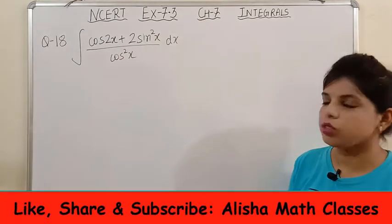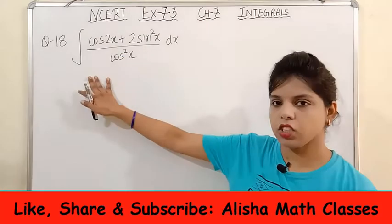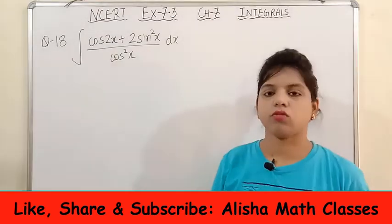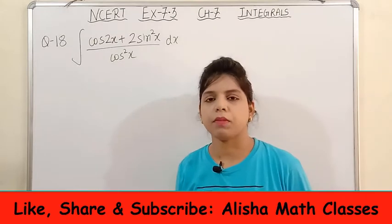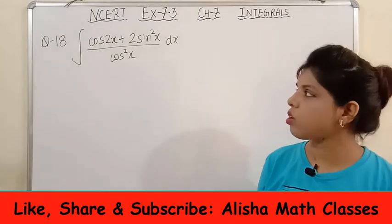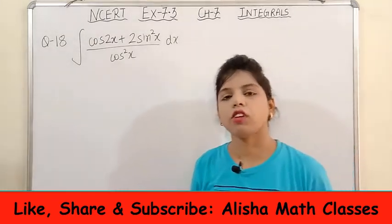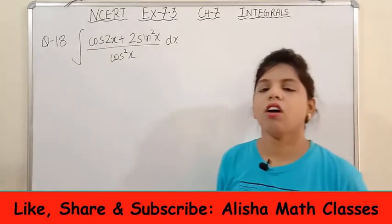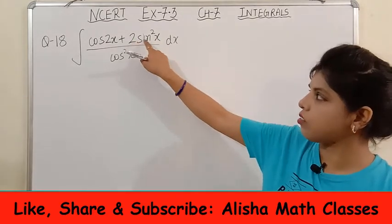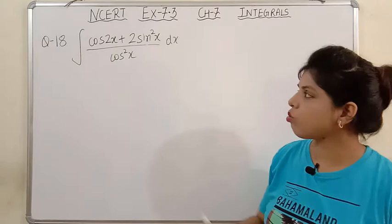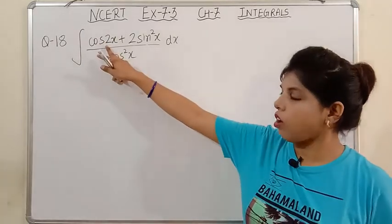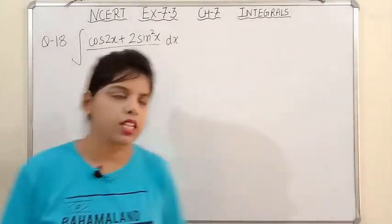Next, question number 18: integration of (cot x + 2sin²x) upon cot x. Here I can see the function has cot x, and for cot x we have two formulas — one in the form of sin²x and one in the form of cos 2x. We have to think about which formula to apply. Since the numerator has 2sin²x, we have to apply the formula of cos 2x in terms of sin.